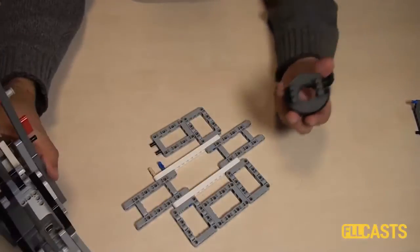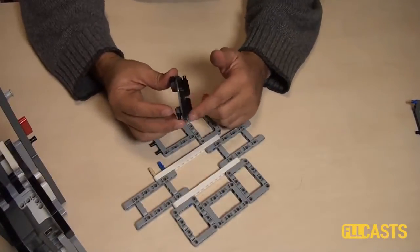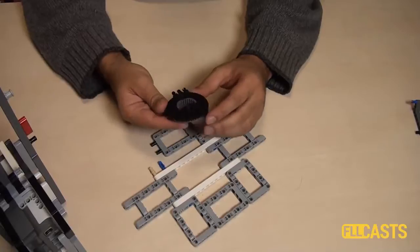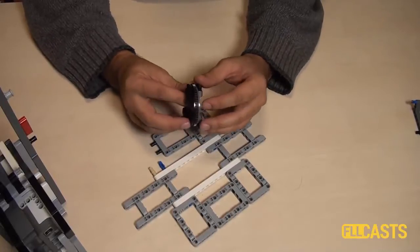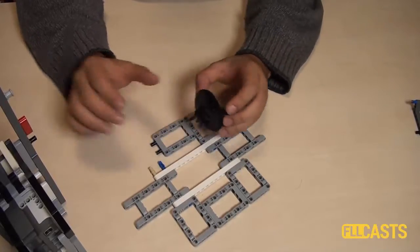For this we could use a part that's available only in the NXT version. So if you have an EV3 version of the robot you have to go with the small base.